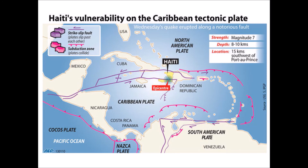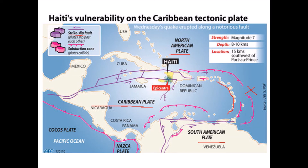Another example worth knowing, as it ties into a case study we will look at, is the fault lines running through Haiti in the Caribbean. We have the Caribbean plate, the North American plate, and the South American plate. Although subduction creates the island arc of the Lesser Antilles, through Haiti, Jamaica, and Cuba there is a transform — or strike-slip — boundary. The Caribbean plate moves east, the North American plate moves west, and one of the fault lines runs right through the capital, Port-au-Prince, near the epicentre of the 2010 earthquake.